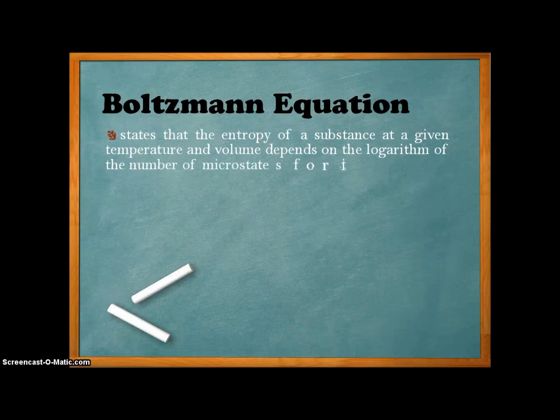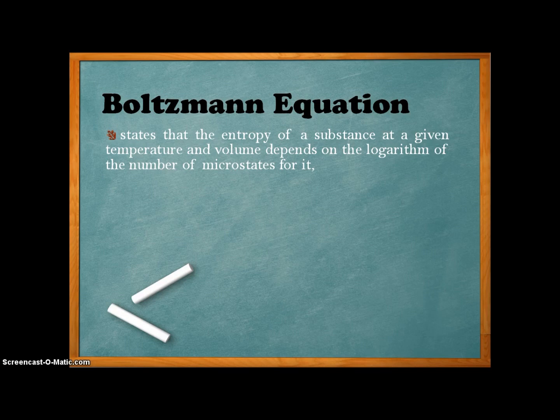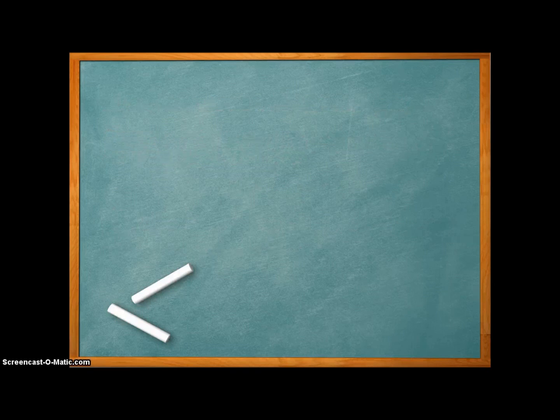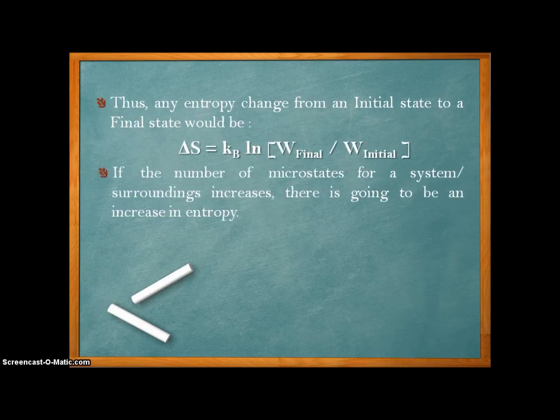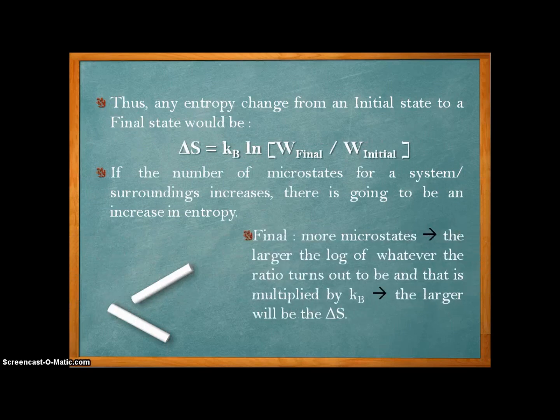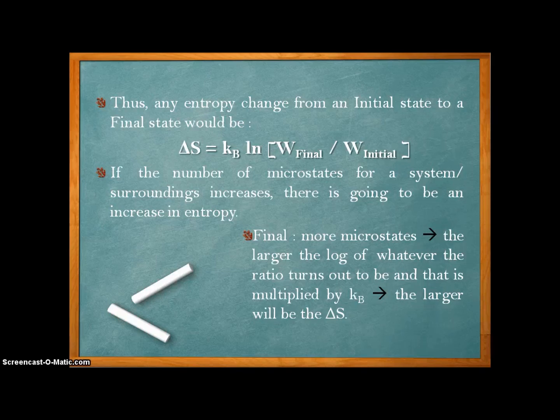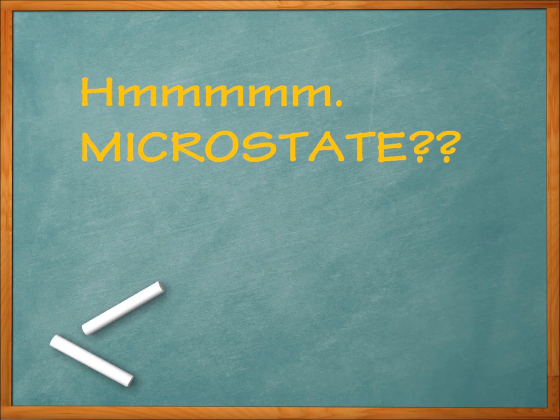Quantitatively, the Boltzmann equation is the relation between microstates and entropy. It states that the entropy of a substance at a given temperature and volume depends on the logarithm of the number of microstates for it. The given equation is S = k ln W. Any entropy change from an initial state to a final state would be ΔS = k ln(Wfinal/Winitial). If the number of microstates for a system increases, there is going to be an increase in entropy.